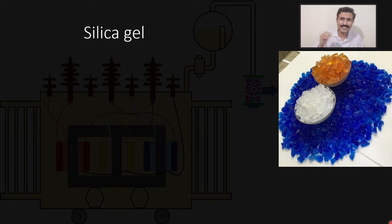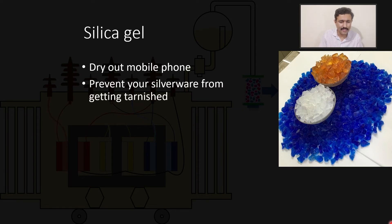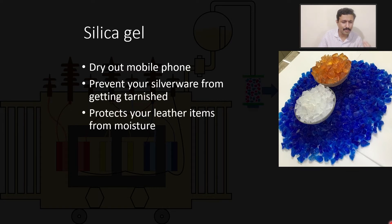Silica gel can be used for many applications. Just imagine that your mobile is synced in the bucket and is fully wet. If you want to dry your phone, take a bag of silica gel, put your mobile phone in silica gel bag for a day and the next day your phone will be dried out. It is even used to prevent your silver from getting tarnished and can also be used to protect your leather item from any moisture.